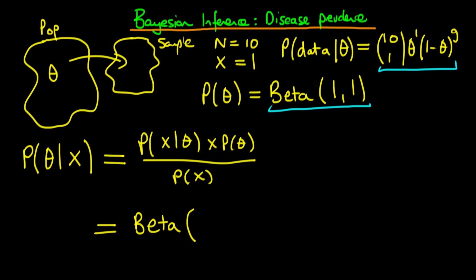And here to work out what the posterior looks like, all we need to do is we need to take the a from our original prior distribution and add it onto x. So now we're just going to get 1 plus 1 for the first input of the beta distribution. And then for the second input, what we're going to do is we're going to take our b from our prior, add on n, and take away x. So we're going to take our b, which is 1 plus 10, and then x is 1, so we're just going to take away 1 from that.